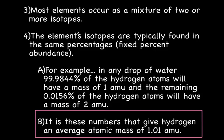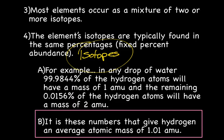The big takeaway from today: isotopes are the same type of atom with similarities and differences. What's the same: number of protons, atomic number, number of electrons, and chemical symbol. What's different: the number of neutrons and therefore the atomic mass. While an individual atom's mass number is a whole number — because you can't have part of a proton or neutron — the average atomic mass on the periodic table is a decimal because it's a weighted average of all the different isotopes of that element.